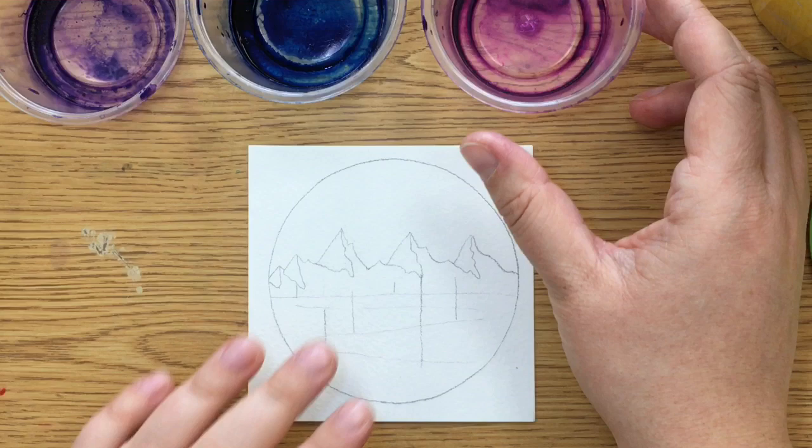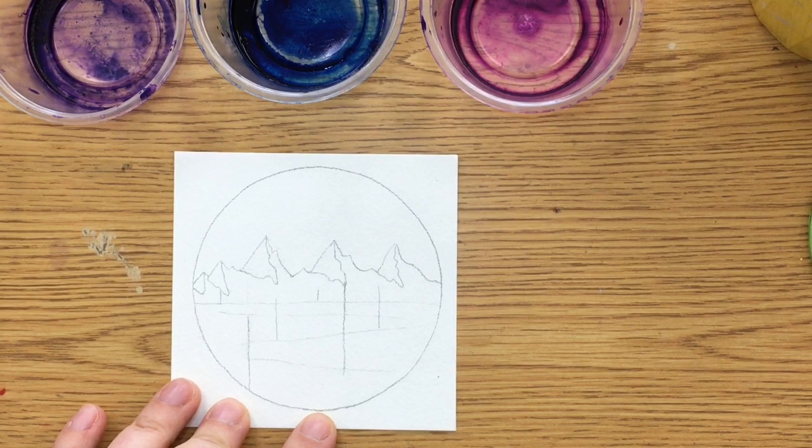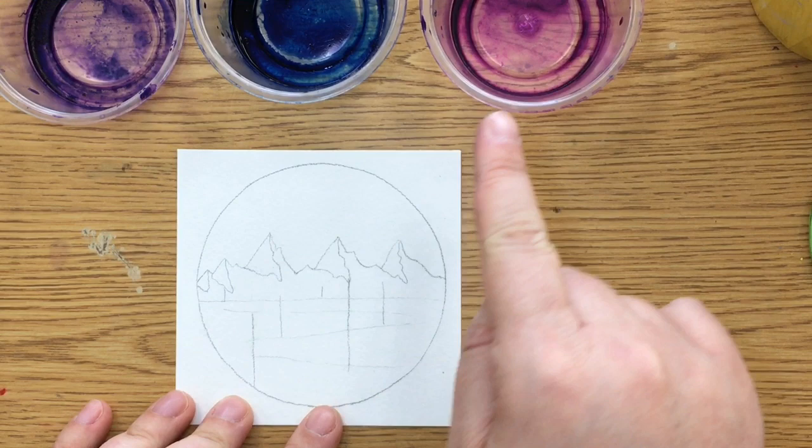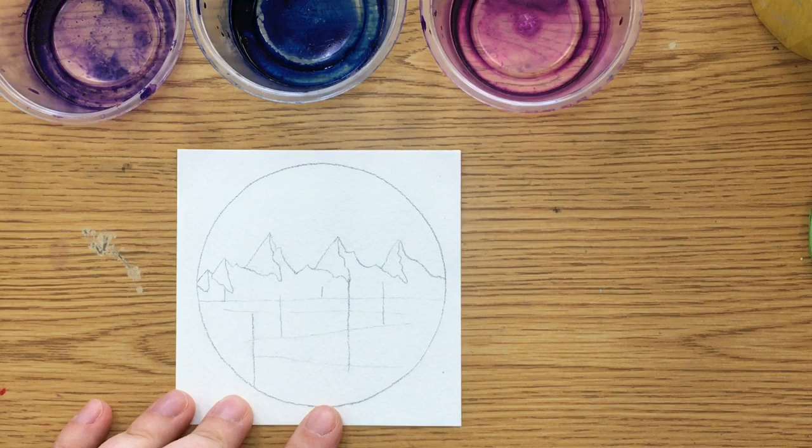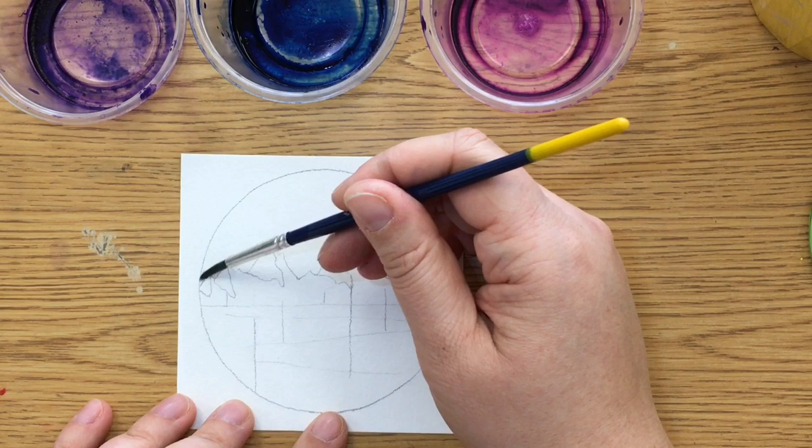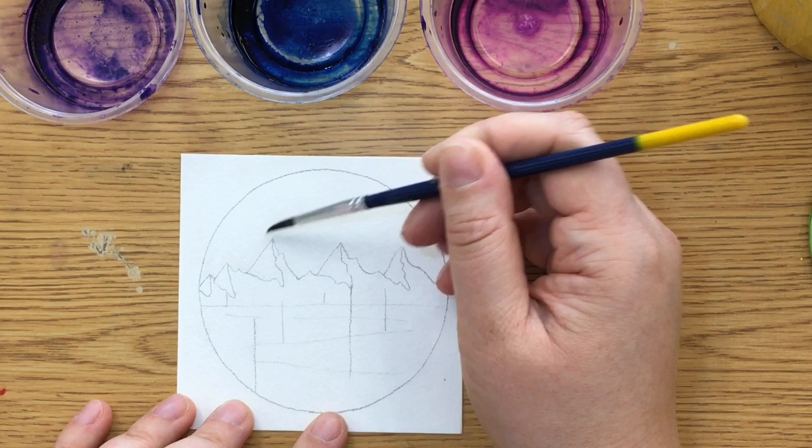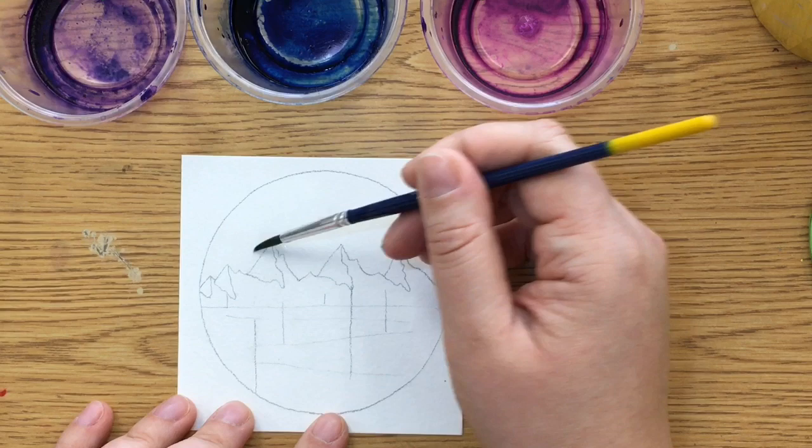All right, now the technique I want to show you with watercolors is one that's called wet on wet. That means you start with wet paper and you add color to the wet paper, and that's what's going to give that really cool spreading effect. So I have a wet brush here and I'm just going to start right here and paint just with water where the mountains are. I'm not going to do the whole thing. I'm just going to start right here at the end. Okay so there's a little bit of water there.